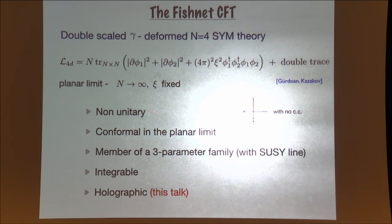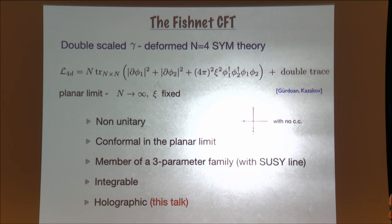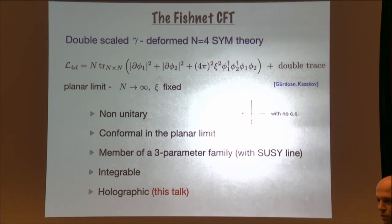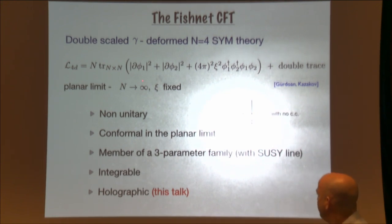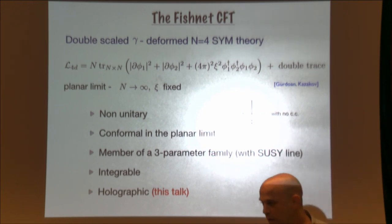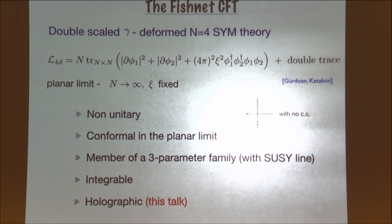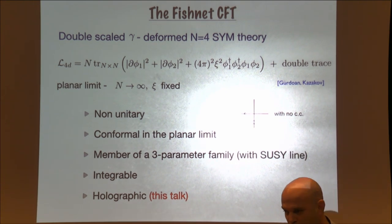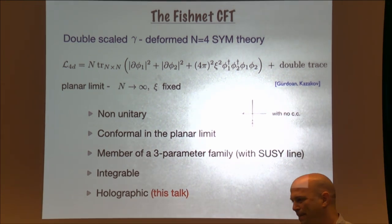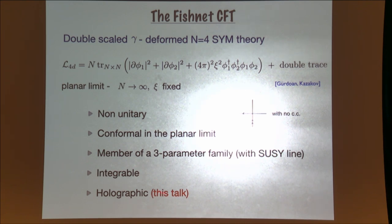What are the properties of this model? First, it's non-unitary because there is only one four-vertex — these are complex scalars but there is no complex conjugate. Second, this model was shown to be conformal in the planar limit. This model is one parameter in a three-parameter family, one of which is the strongly beta-deformed theory of N=4. The supersymmetric line has also some fermions and it's conformal all along the deformation. It also turned out to be integrable and, as I'll talk about today, it's also holographic.